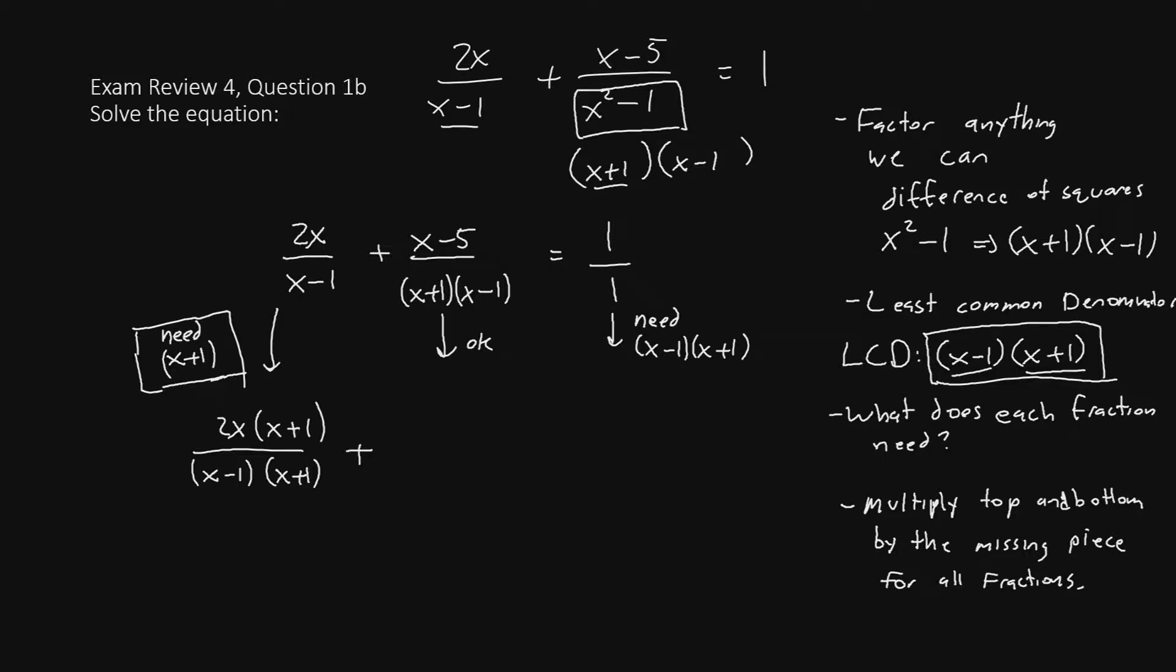Let's do the same thing to the other fractions. Now, the second fraction is already okay. It does not need any changes at all. The third fraction needs both x minus 1 and x plus 1. So, we start with 1 over 1. We need x minus 1 x plus 1 on both the top and the bottom.